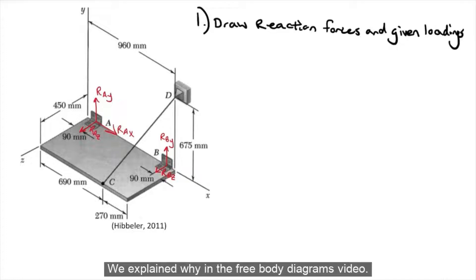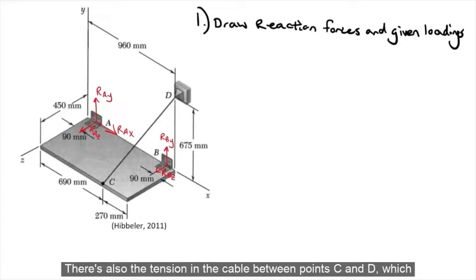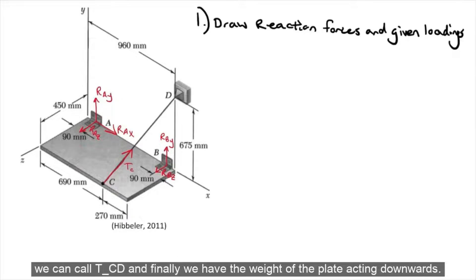We explained why in the free body diagrams video. There's also the tension in the cable between points C and D, which we can call T_CD. And finally, we have the weight of the plate acting downwards.